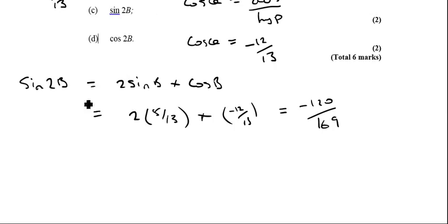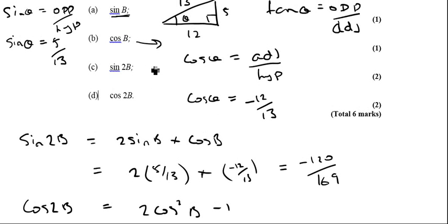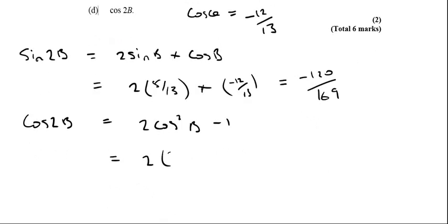And then the last one I want to find, cos 2θ. So cos 2θ equals 2 cos squared θ take away 1. Again, I'd already worked out what cos θ is equal to. So that's going to be 2 lots of cos θ, minus 12/13 squared, minus 1. And if I work that out, I'm going to end up with 119 over 169.